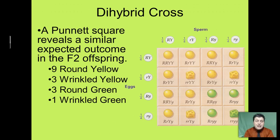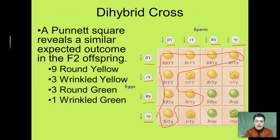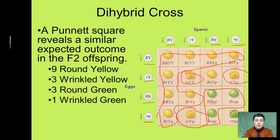A Punnett square shows how this outcome can occur. As a result of independent assortment, we get unique gamete combinations from the F1 hybrids. When they combine, we get four different phenotypes that can arise: nine out of sixteen are round and yellow, three out of sixteen are wrinkled and yellow, three out of sixteen are green and round, and one out of sixteen is green and wrinkled. Those unique gametes combine to create the varieties we saw in Mendel's experiment.